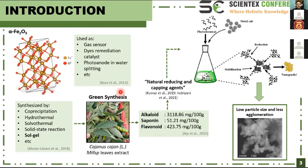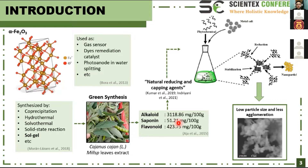Hematite has been synthesized using various methods, such as co-precipitation, hydrothermal, solvothermal, solid-state reactions, and sol-gel. Among the available wet chemical methods, the sol-gel process is undoubtedly the simplest and cheapest one. The advantages of the sol-gel method are its versatility and possibility to obtain high purity materials. However, this method uses hazardous chemicals as reducing agents and capping agents, which are harmful to the environment. In some conditions, high-cost capping agents are used.